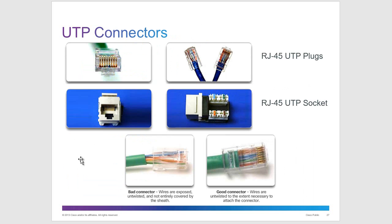Different connector types: we have the RJ45 unshielded twisted pair plug and a socket with a punch-down on the back — you use a punch tool to punch it down. When making cables, you want to make sure the plastic shielding is all the way inside the head before you crimp it down. If it's not, you've got exposed wires that can easily be pulled out and ruin the cable.